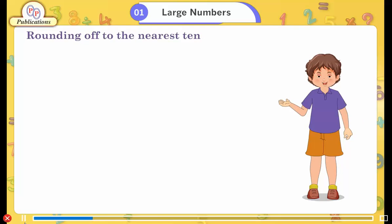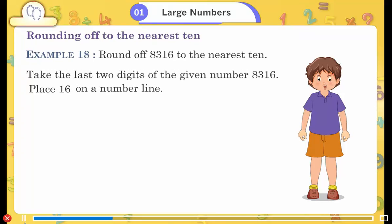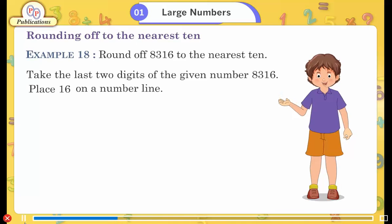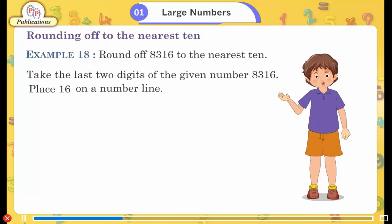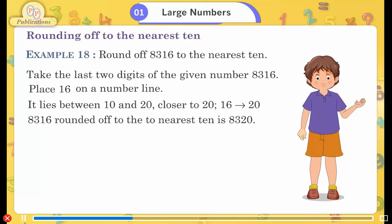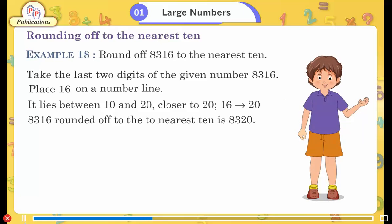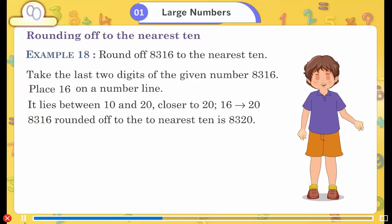Rounding off to the nearest ten. Example 18: Round off 8316 to the nearest ten. Take the last two digits of the given number: 16. Place 16 on a number line — it lies between 10 and 20, closer to 20. Sixteen is closer to twenty. Therefore, eight thousand three hundred sixteen rounded off to the nearest ten is 8320.